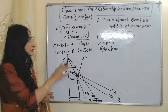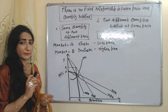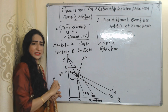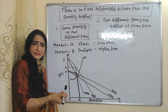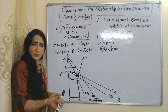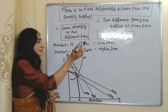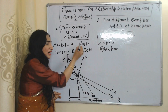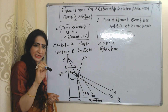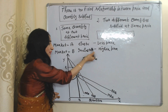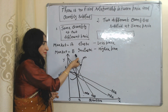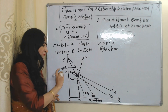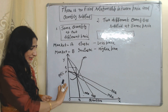First, we will see when monopoly sells the same quantities at two different prices. Suppose there are two markets — Market A and Market B. The monopoly is selling the same quantities in both markets, but it is charging a lower price from Market A because demand is very elastic in Market A, and charging a higher price from Market B because demand is very inelastic in Market B. We will see the same thing with the help of a diagram.